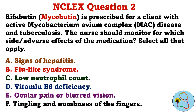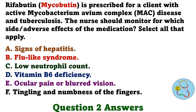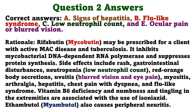Question 2. Rifabutin is prescribed for a client with active mycobacterium avium complex disease and tuberculosis. The nurse should monitor for which side/adverse effects of the medication. Select all that apply. A. Signs of hepatitis. B. Flu-like syndrome. C. Low neutrophil count. D. Vitamin B6 deficiency. E. Ocular pain or blurred vision. F. Tingling and numbness of the fingers. The correct answers are A. Signs of hepatitis. B. Flu-like syndrome. C. Low neutrophil count. And E. Ocular pain or blurred vision.